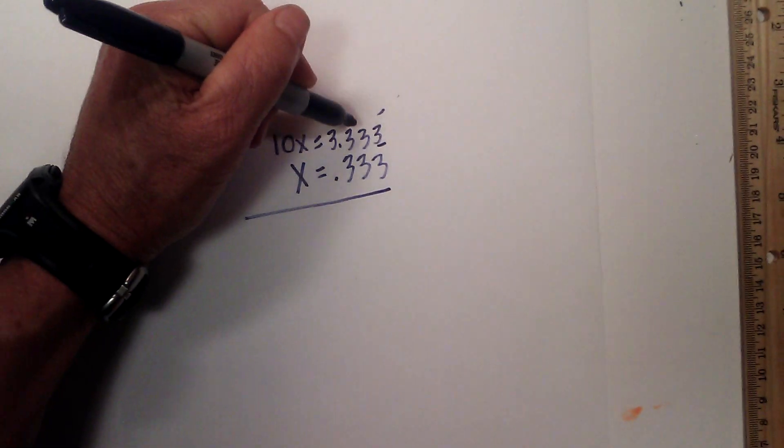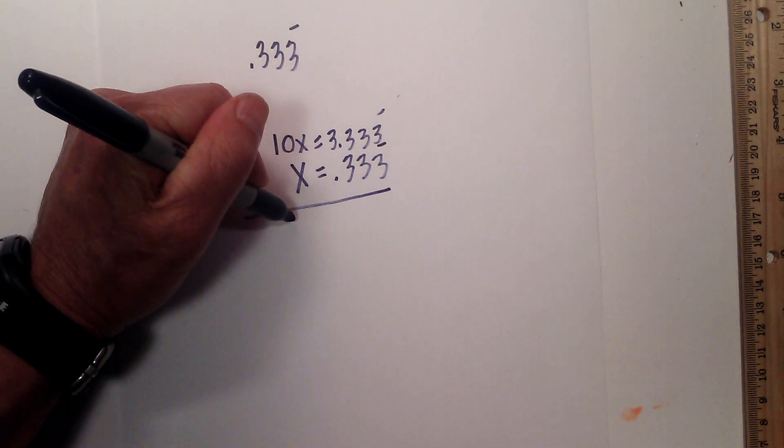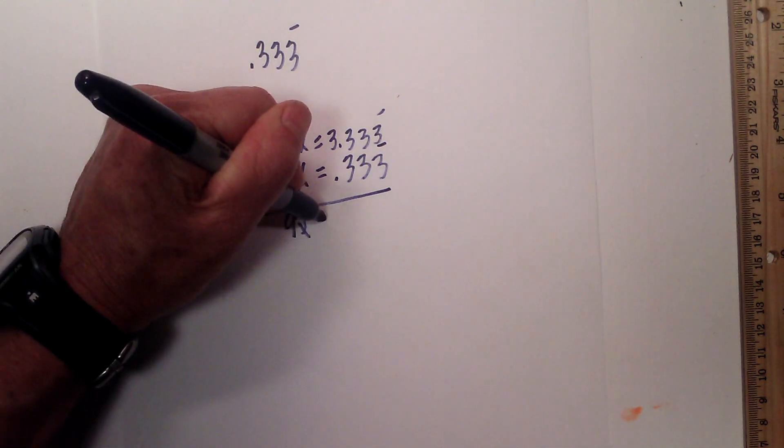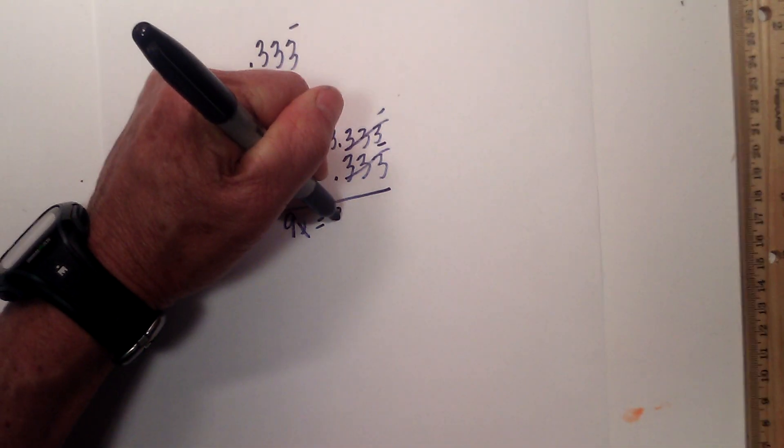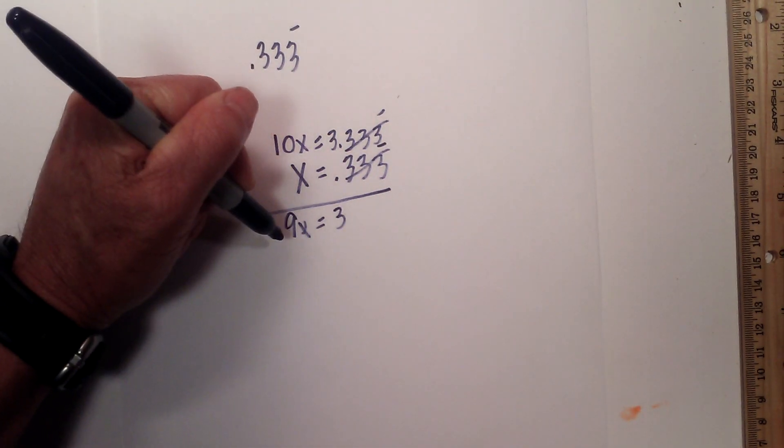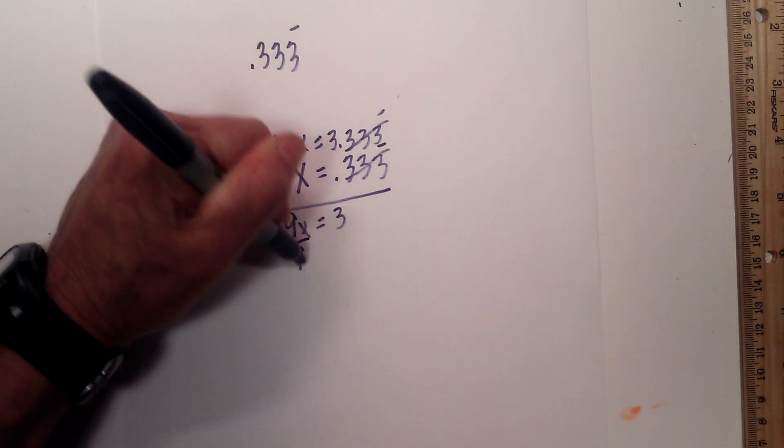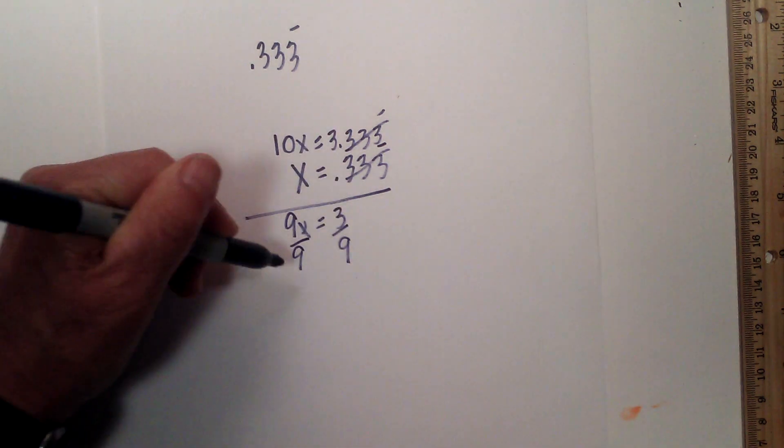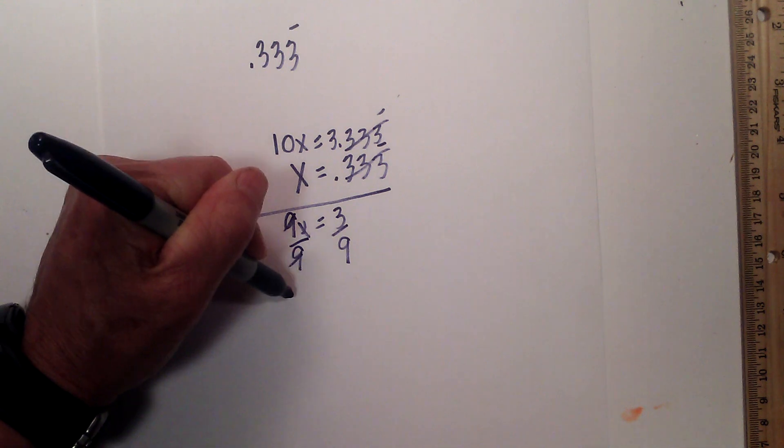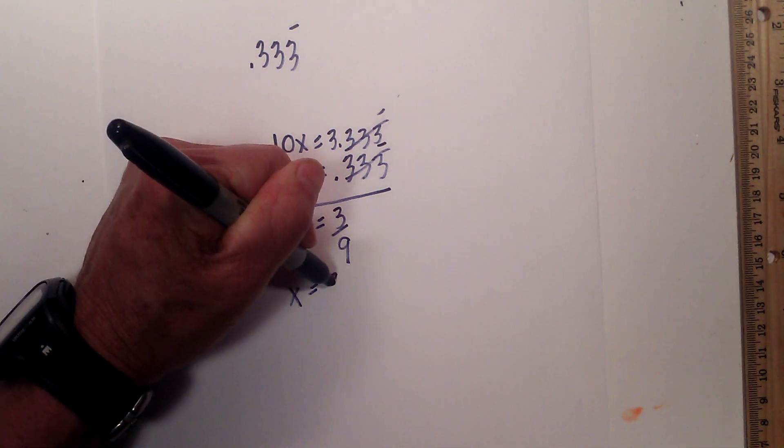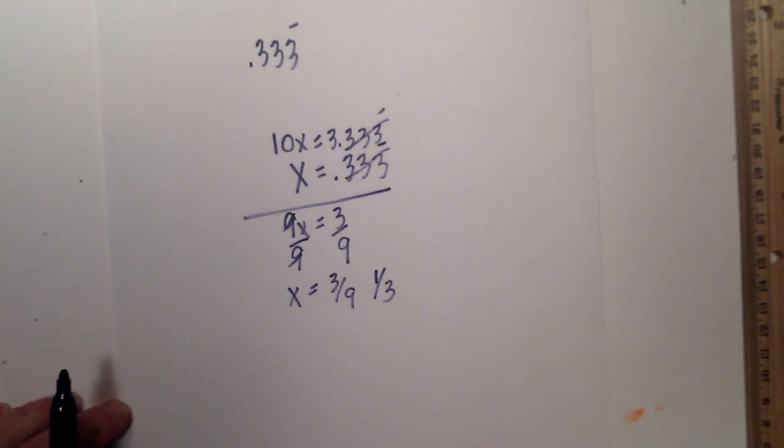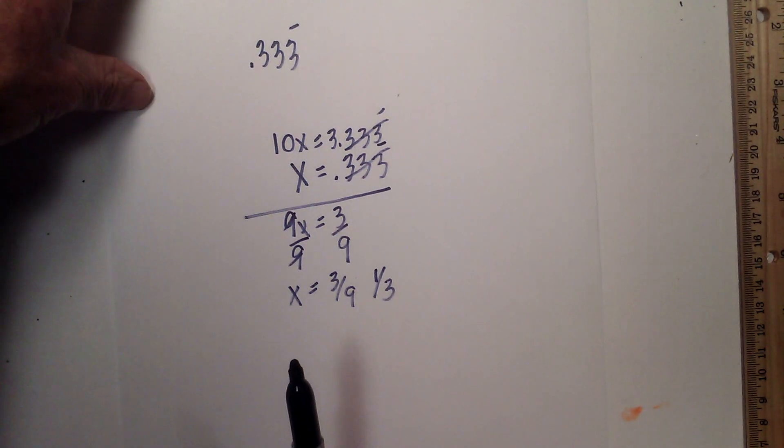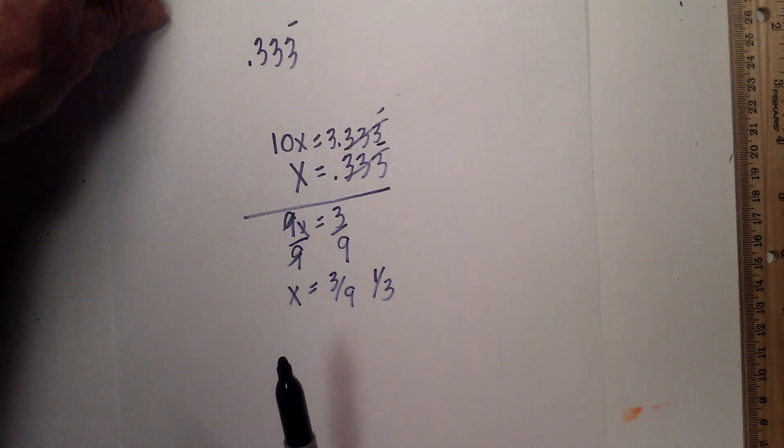10x minus x is 9x is equal to, all these cancel out, 3. And then divide, solve for x. So I would divide both sides by 9. So this becomes the 9's cancel. So x is equal to 3 ninths or 1 third if you simplify. That's problem number one. Fairly straightforward. Let's move on to a second one.